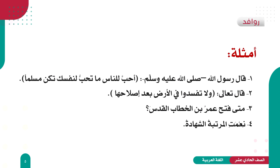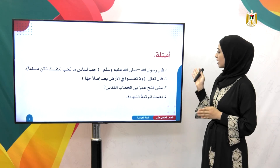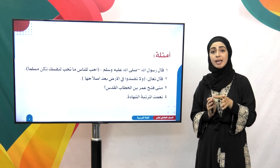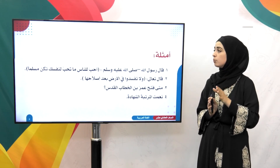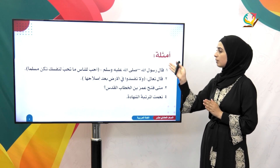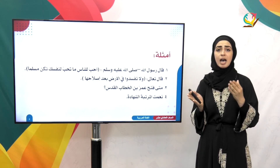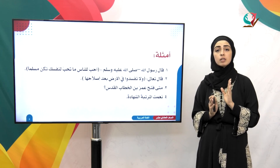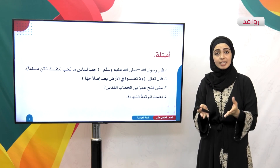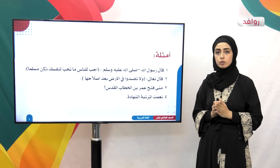من خلال هذه الأمثلة التي أمامنا سنتبين ماذا نقصد بالإنشاء. المثال الأول: قال رسول الله صلى الله عليه وسلم: «أحب للناس ما تحب لنفسك تكون مسلماً». هذه الجملة لا نستطيع أن نحكم عليها بالصدق أو الكذب، فالرسول صلى الله عليه وسلم يعطينا أمراً بأن نحب لغيرنا ما نحب لأنفسنا.